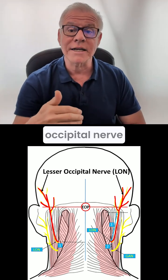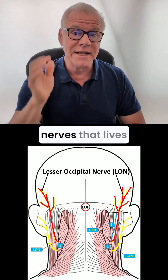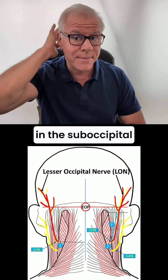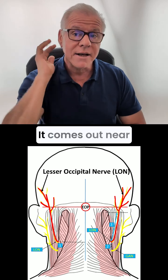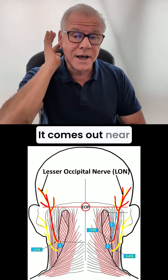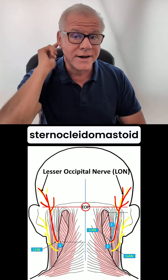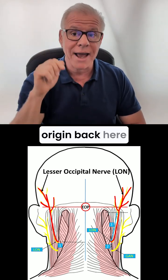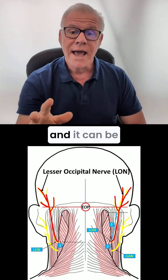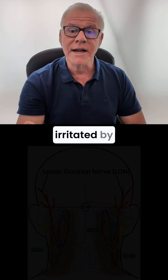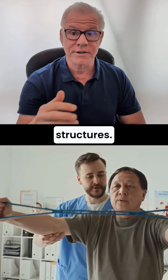The lesser occipital nerve is one of the many nerves that lives in this suboccipital area. It comes out near the sternocleidomastoid origin, back here near the mastoid, and it can be irritated by numerous different structures.